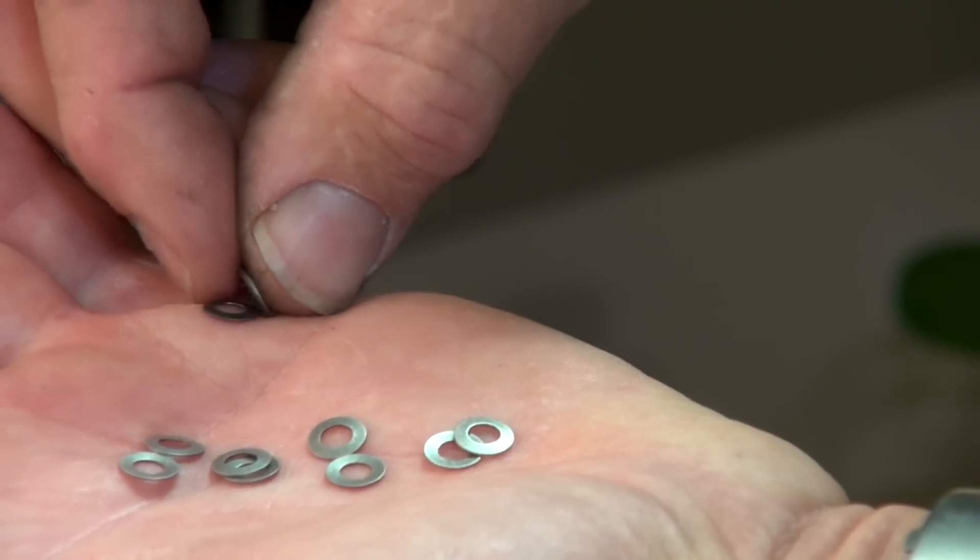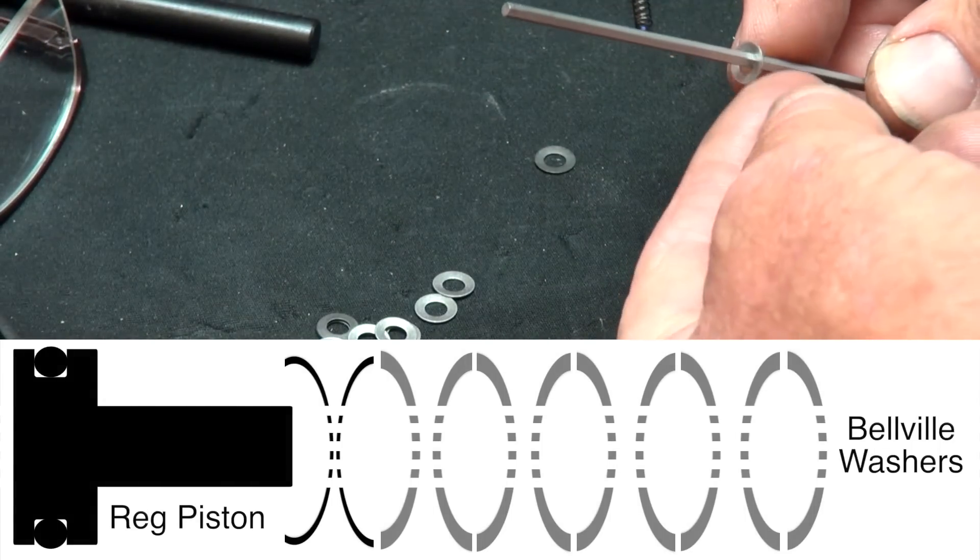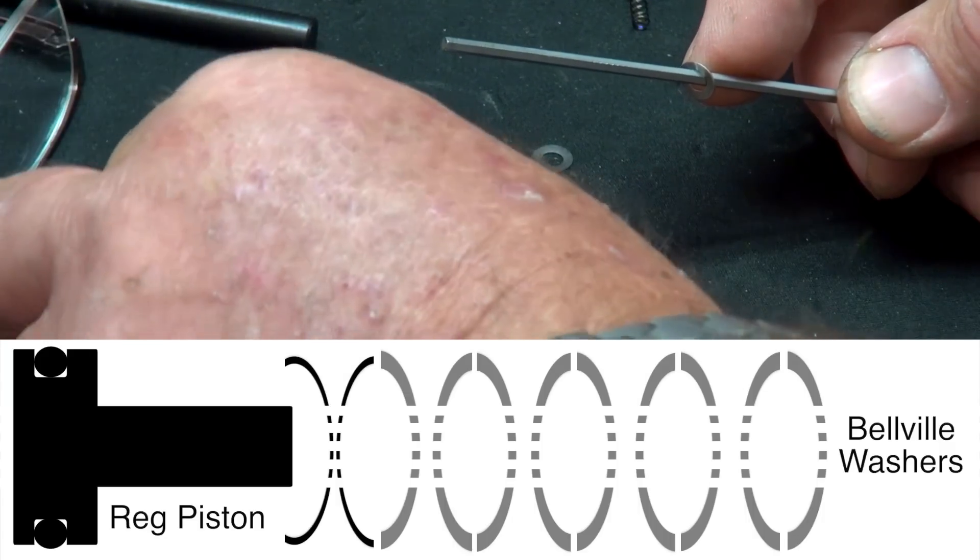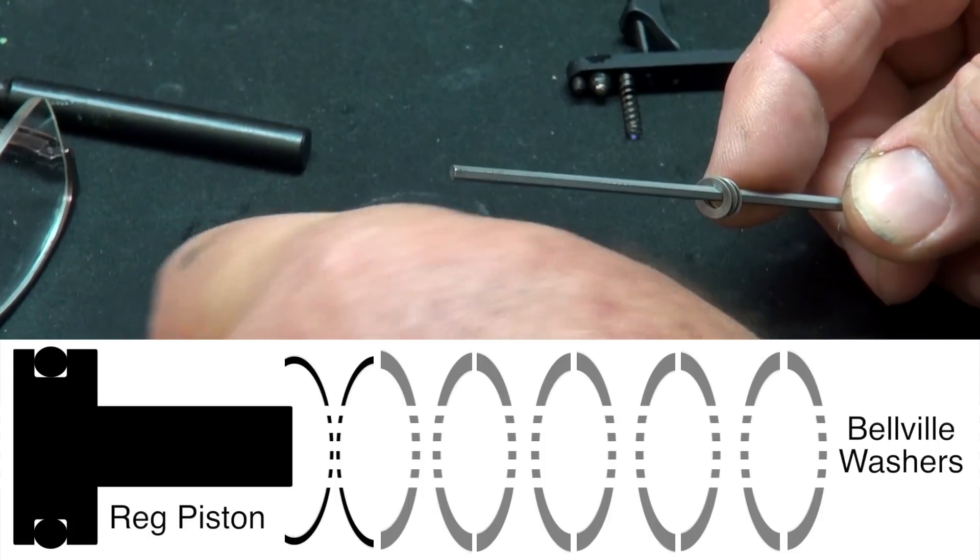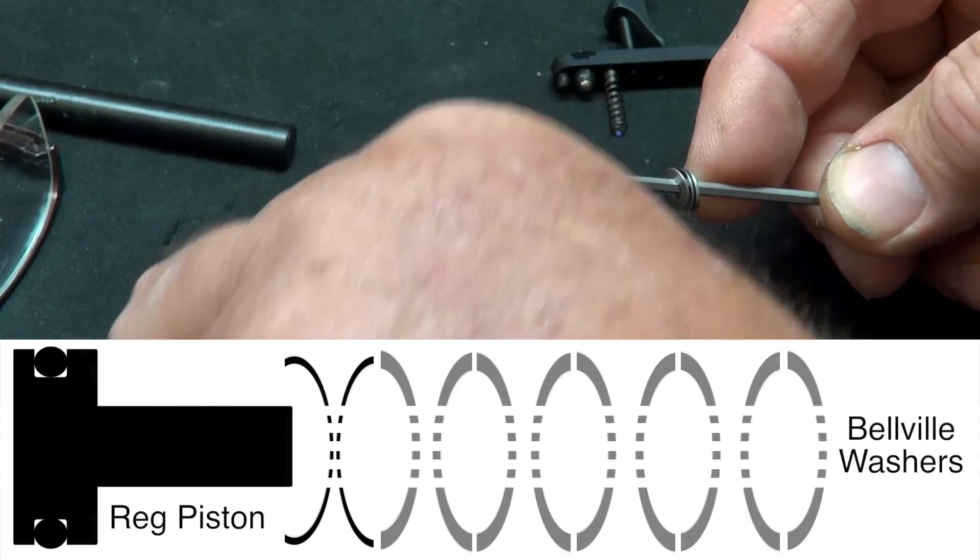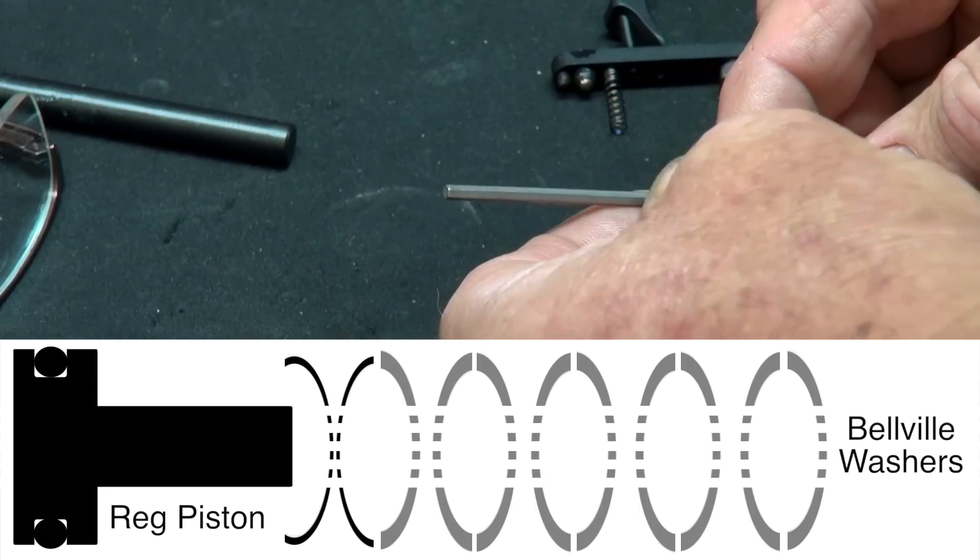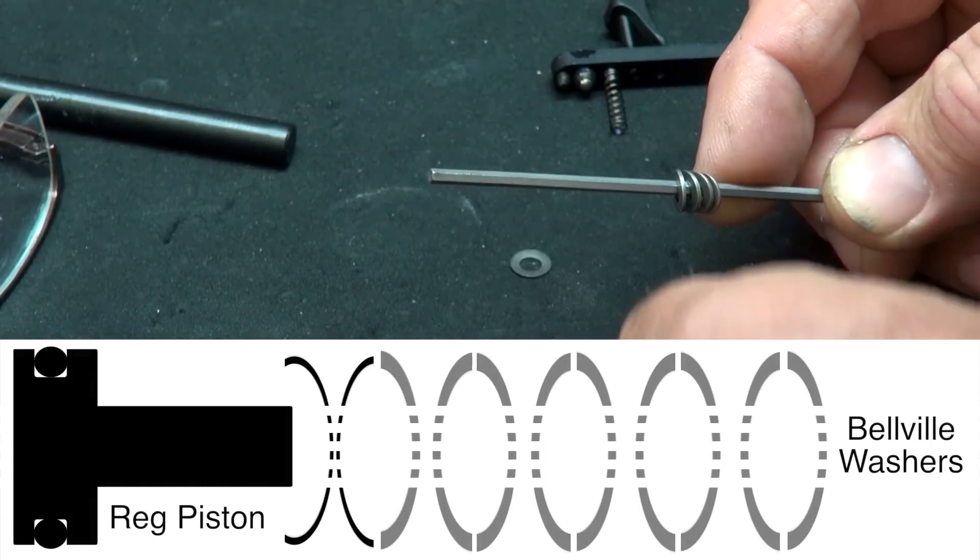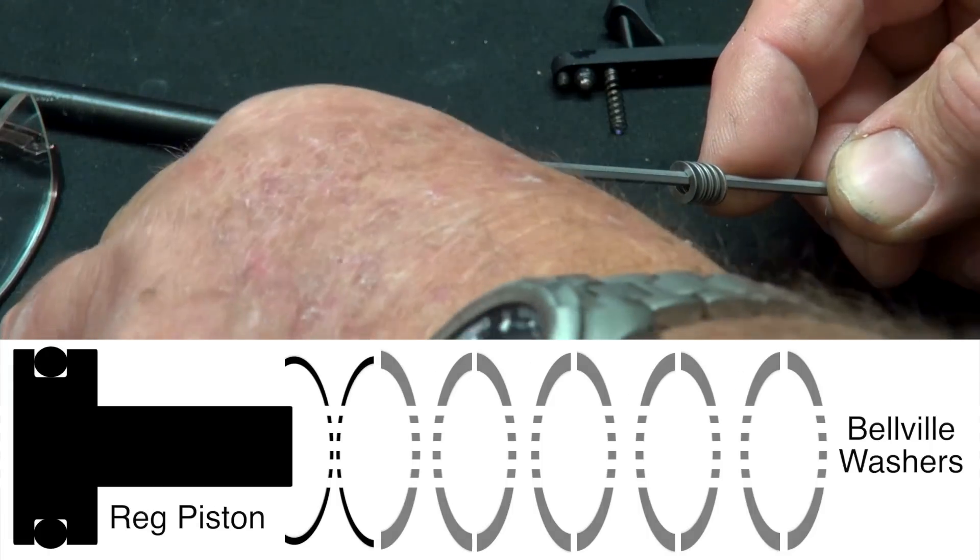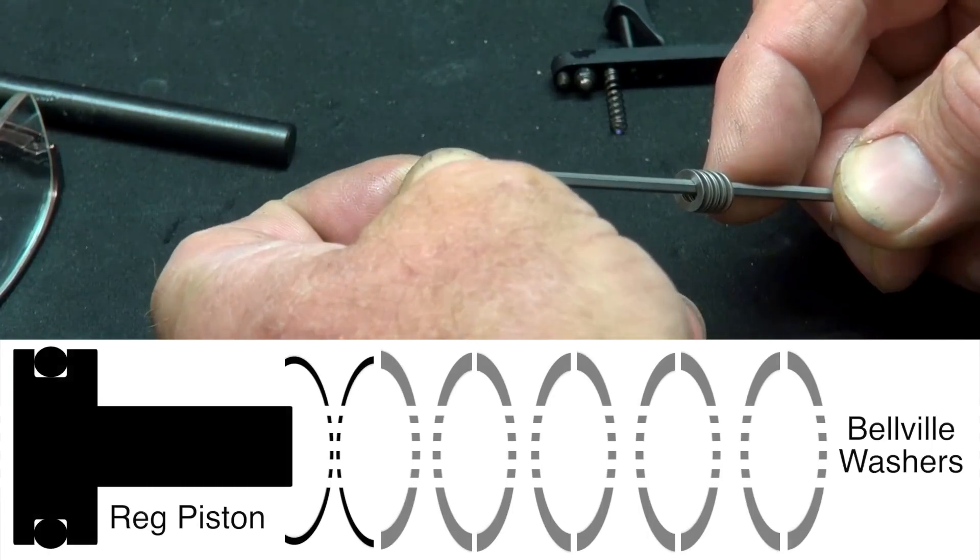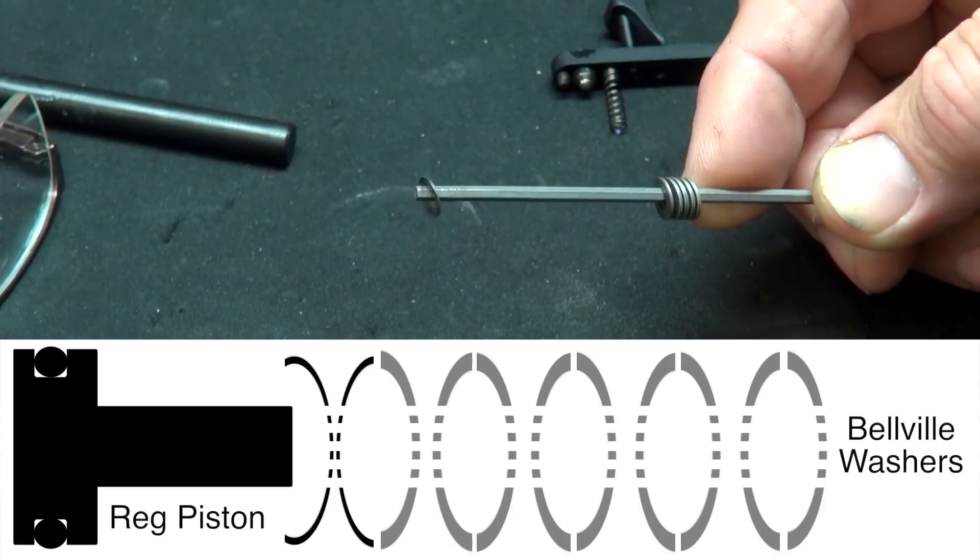So an easy way to install the Belleville washers onto the piston is to take a normal Allen wrench. As you can see, the cup is facing that direction. This cup is opposing it. Same order. Cup's facing that direction. This cup's opposing it, facing this direction. Again, for the third set. Again, for the fourth set. The last silver heavy Belleville washer, the cup will be facing to the left. The first black Belleville washer, which is thinner, will be opposing it. So there will be two cups opposing each other. And the very last one, the black thin one, will be the cup facing again left.